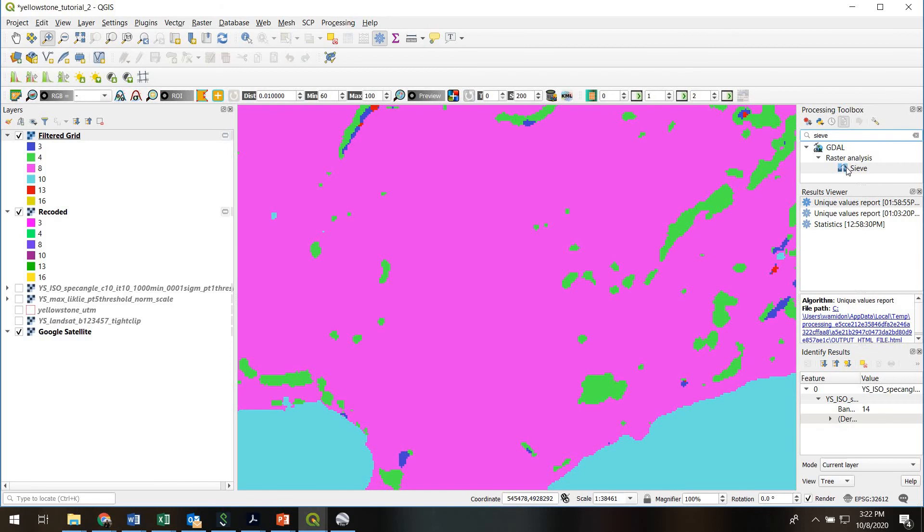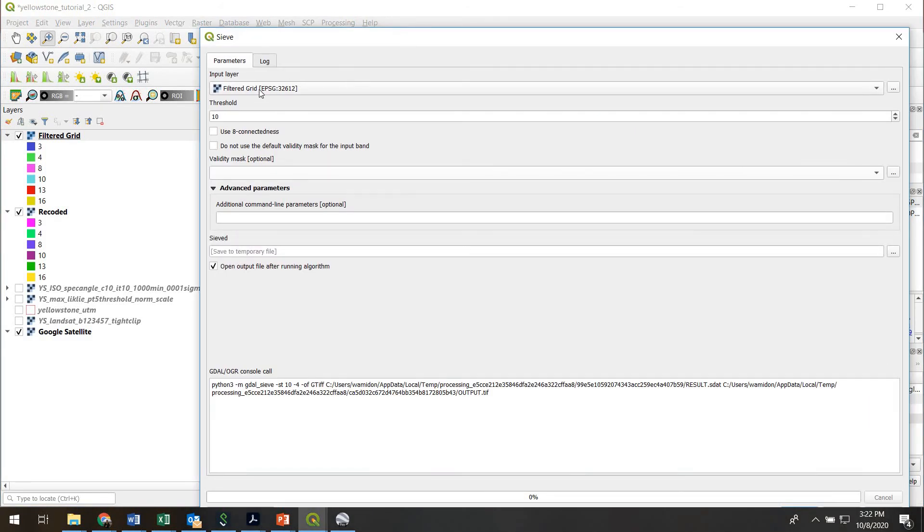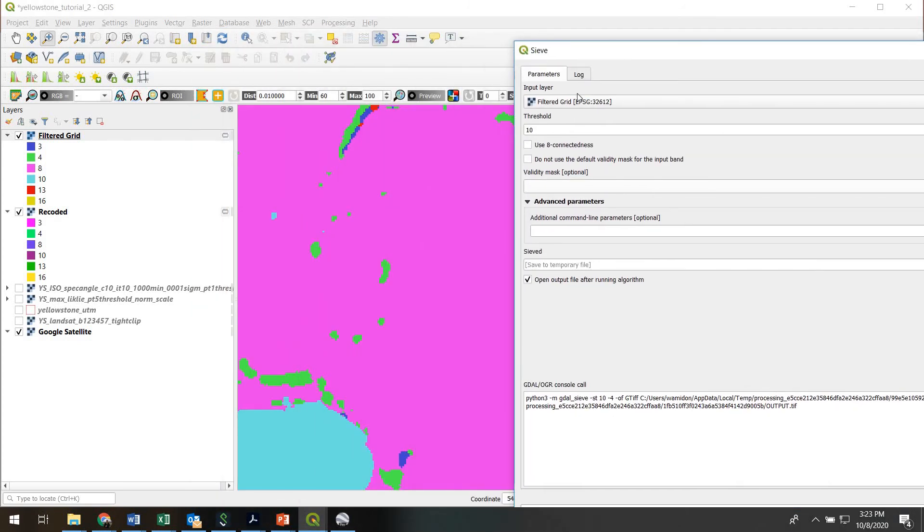Here's the sieve tool in the processing toolbox. We're gonna do it on our most recent edition. You can do it on any classified image. And that's actually an important point, you don't want to do it on any raster only on classified images where you have a limited number of pixel values.